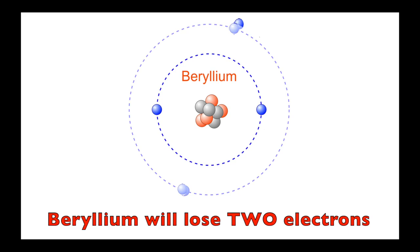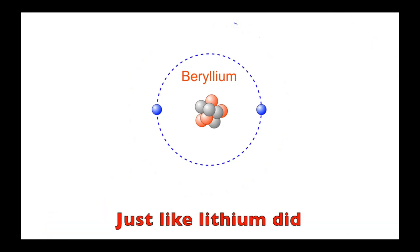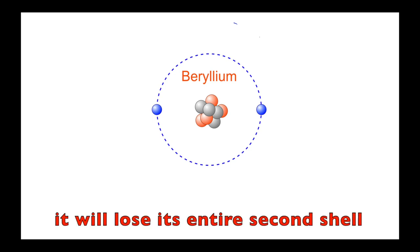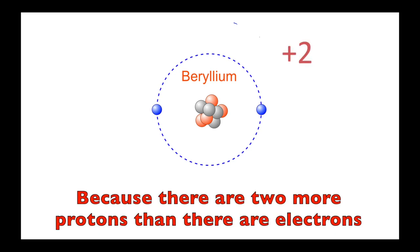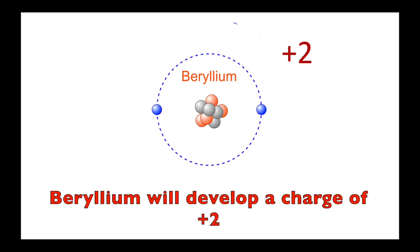Beryllium will lose two electrons. Just like lithium did, it will lose its entire second shell. Because there are two more protons than there are electrons, beryllium will develop a charge of plus two.